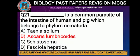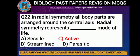Question number 22: In radial symmetry, all body parts are arranged around the central axis. Radial symmetry is associated with a passive or active mode of life in certain animal groups.